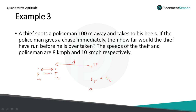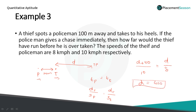Time equals distance by speed. So distance covered by the police divided by speed of police equals distance covered by the thief divided by speed of the thief: (d plus 100) divided by 10 equals d divided by 8. Simplifying this equation gives d equals 400. So the thief has run 400 meters before the policeman overtakes him.